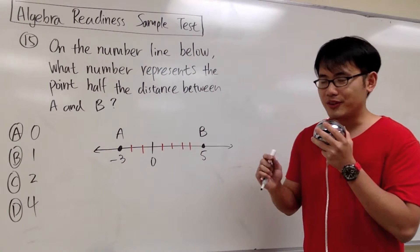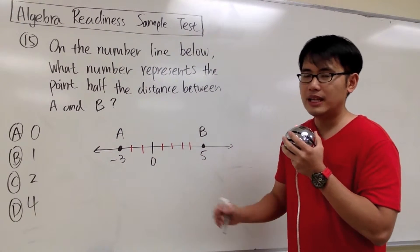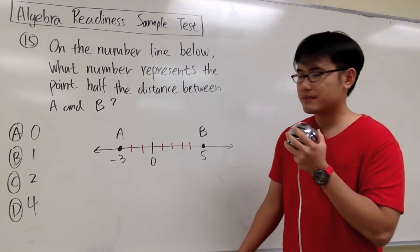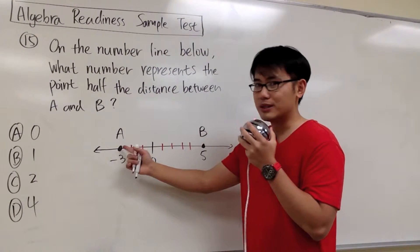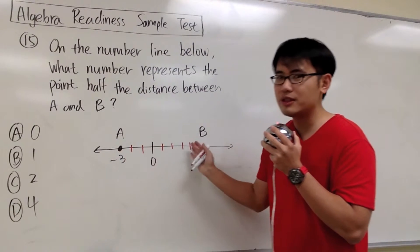our first goal is to figure out what's the distance from A to B, and then we have to cut it in the middle. So we can just count, or you can do subtract, but I think counting is easier right here, because we have all the little lines ready for us.